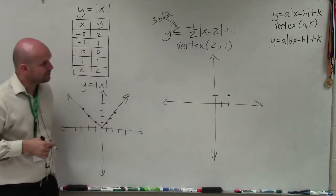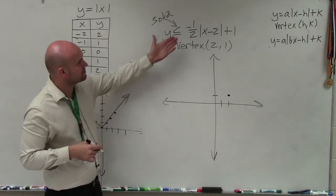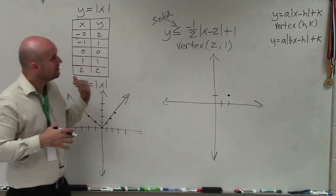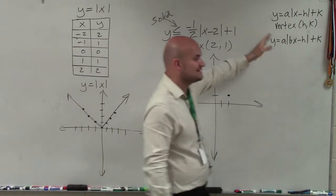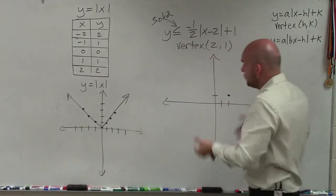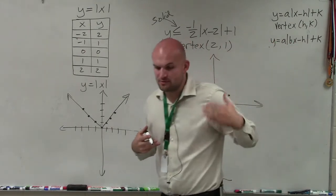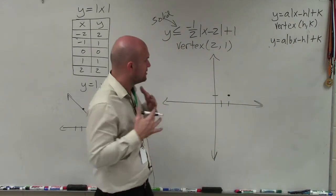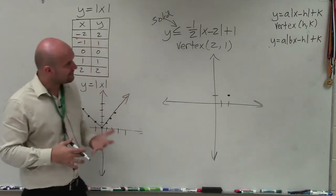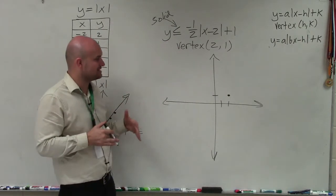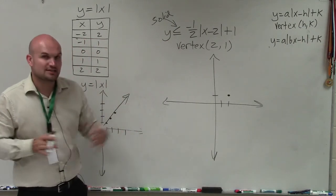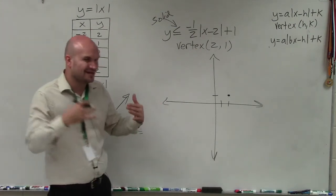Now, what we want to do is identify or notice what this negative 1/2 is doing. Once I know it's a negative, that means my a is negative. That means my graph, instead of opening up, is now going to open down. So it's very important to know that when you have a negative a, your graph is going to be opened down. But what is the 1/2 going to do? The 1/2 is actually going to horizontally stretch my graph. But to really understand that, what I think is best to do is create a table of values.